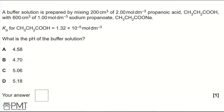A buffer solution is made by mixing 200 cm³ of 2 mol dm⁻³ propanoic acid with 600 cm³ of 1 mol dm⁻³ sodium propanoate. Ka for propanoic acid is 1.32 × 10⁻⁵ mol dm⁻³. What is the pH? Options: A: 4.58, B: 4.70, C: 5.06, D: 5.18.